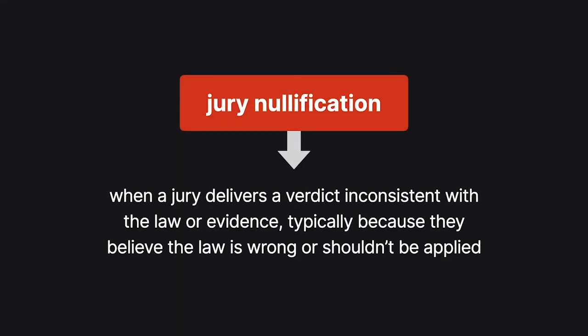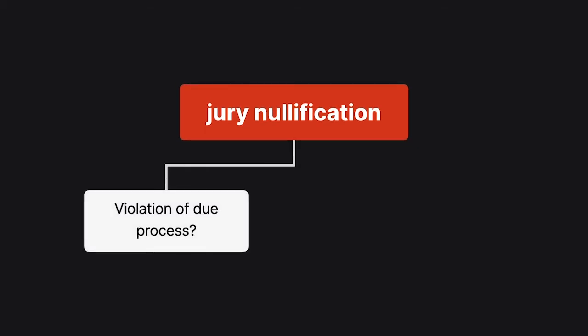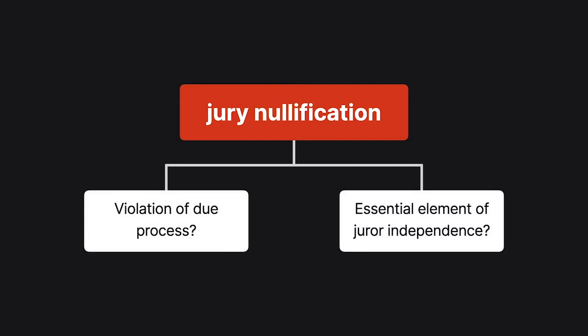Jury nullification occurs if a jury delivers a verdict that is inconsistent with the law or the evidence, typically because the jurors believe that the law is wrong or shouldn't be applied in the situation. There's some controversy as to whether this is a violation of due process or an essential element of juror independence.